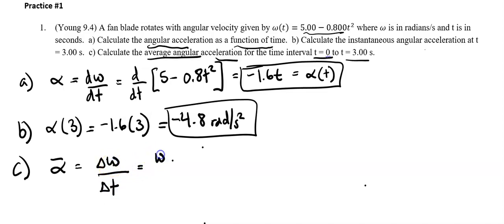This is omega final. So omega at 3 seconds, take away our initial omega, which is omega at 0, over the change in time. That's like omega final minus omega initial.